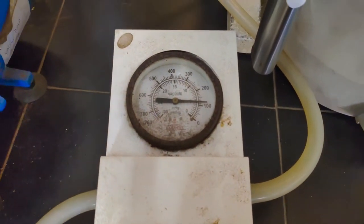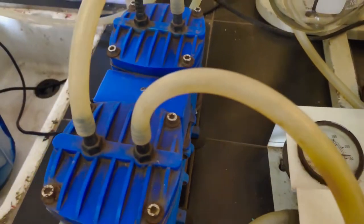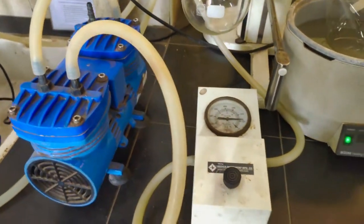The pressure gauge is used to monitor the vacuum inside the flask. The vacuum is supplied by this vacuum pump.